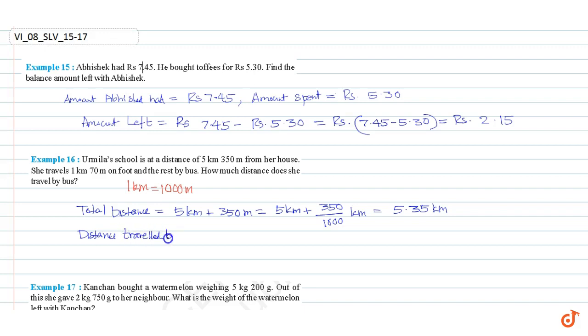Distance traveled on foot equal to 1 km plus 70 meters, which is equal to 1 km plus 70 divided by 1000 km, which is equal to 1 km plus 0.070 km, equal to 1.070 km.